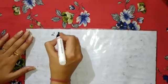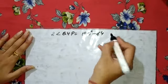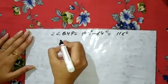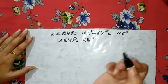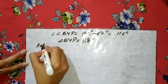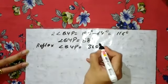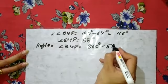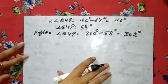After that, 2 × angle QYP equals 180 degrees minus 64 degrees, which equals 116 degrees. Therefore, angle QYP equals 58 degrees. Now for reflex angle QYP: reflex QYP equals 360 degrees minus 58 degrees, which equals 302 degrees.